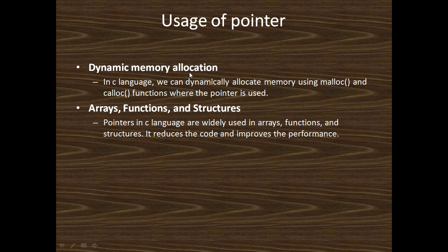The uses of pointers are: first, dynamic memory allocation, and second, array, function, and structure. In dynamic memory allocation, we can dynamically allocate memory using malloc and calloc functions, where the pointer is used. Pointers in C language are widely used in arrays, functions, and structures — they reduce the code and improve the performance.